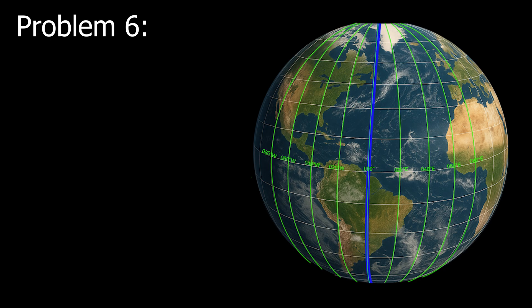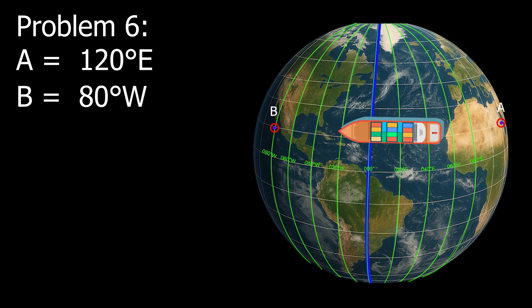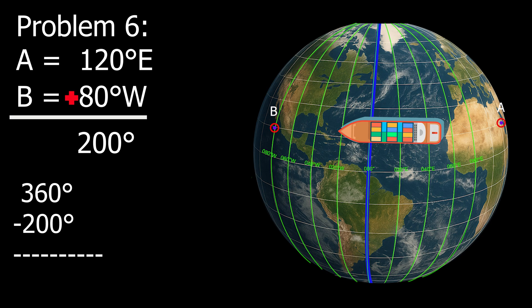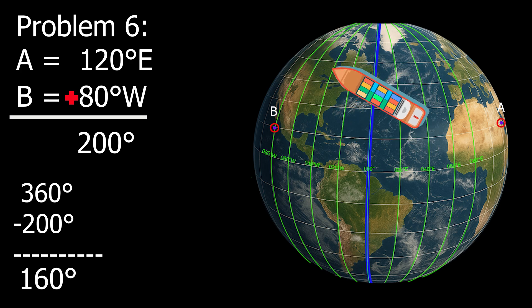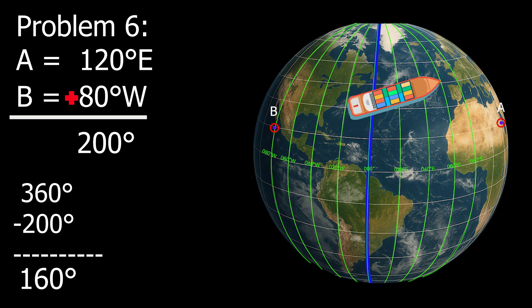Example number six: Point A, 120 degrees east. Point B, 80 degrees west. The points are in different hemispheres, so we add them: 120 plus 80 equals 200. Since this is more than 180, we subtract from 360: 360 minus 200 equals 160. Since the vessel will take the shorter route, the vessel will now move the opposite direction. Therefore, the D-long is 160 degrees east.